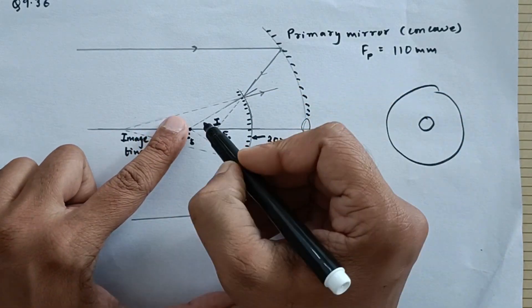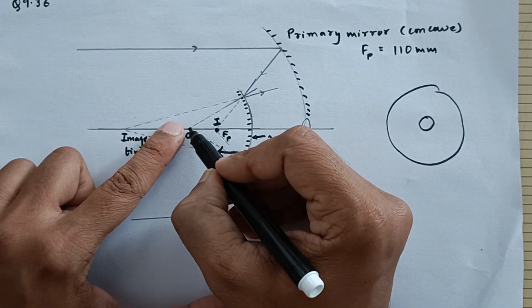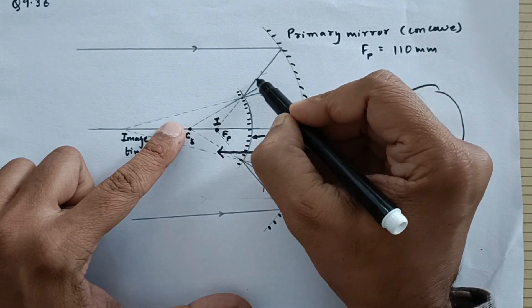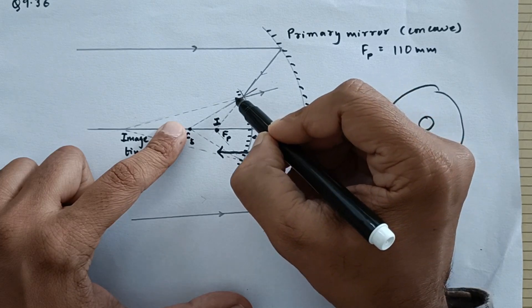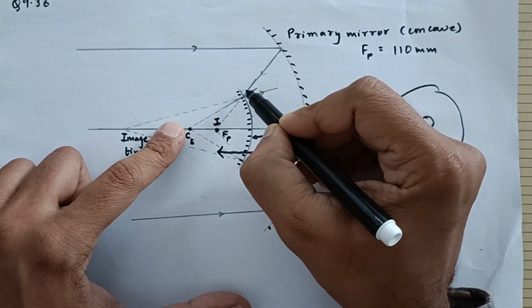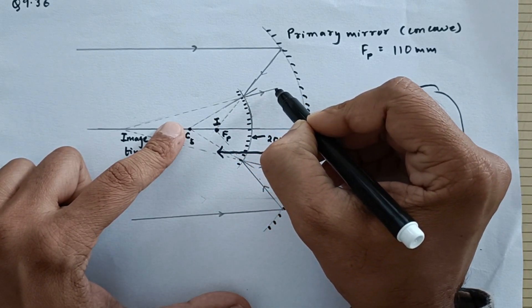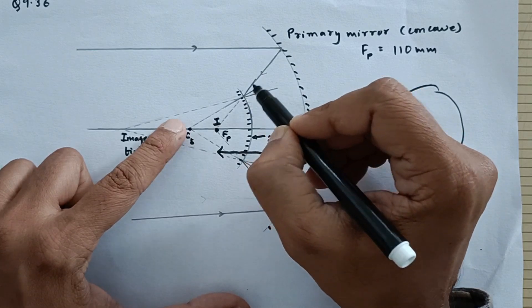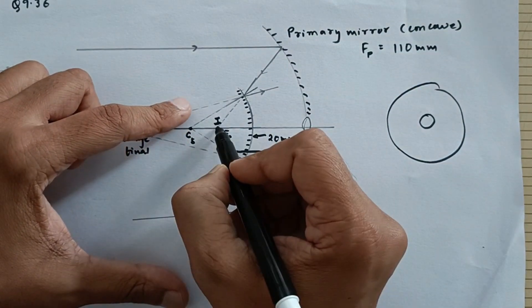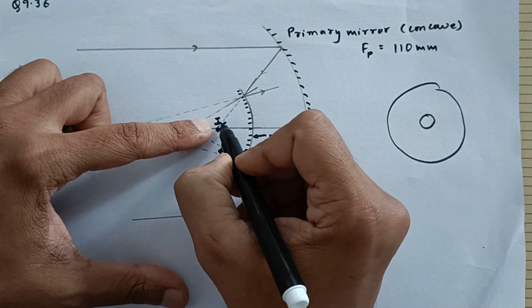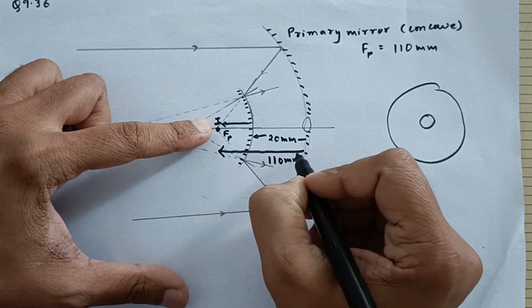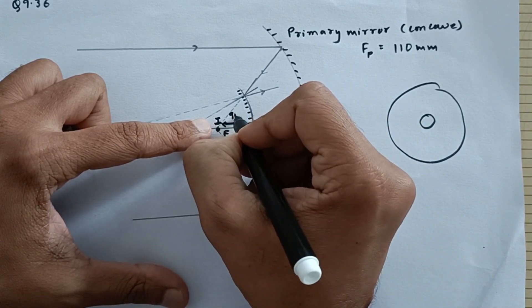So for this mirror, this image is going to behave as a virtual object. So for this mirror, this is the center of curvature. So when the rays fall we know that it is going to reflect, but the normal is going to pass through C. So after reflection this ray is going to go somewhere like this. Now how do I know? Let us check that. So this is the image which is going to behave as the object for this mirror, and this distance would be 110 minus 20, so 90 mm.